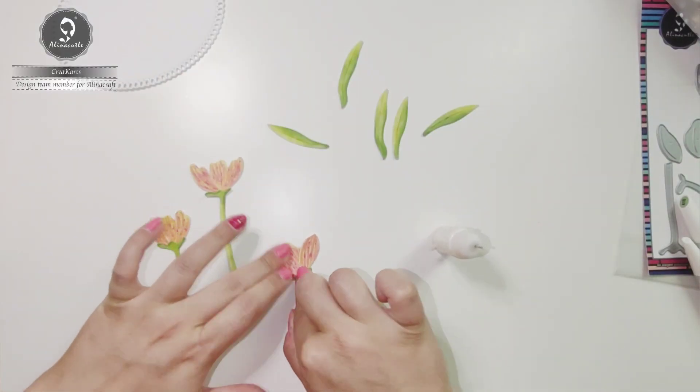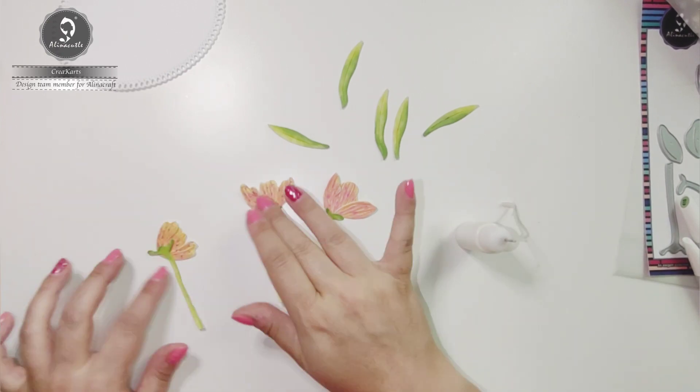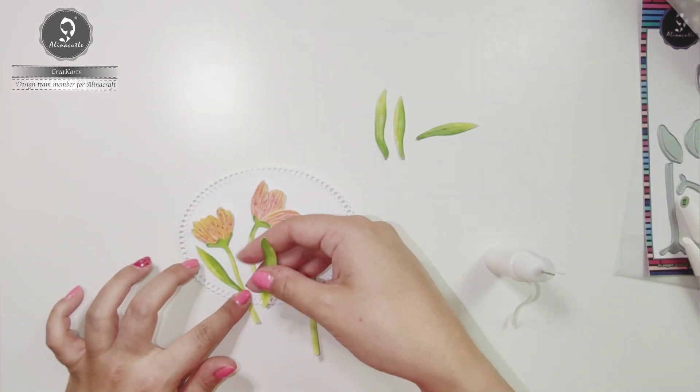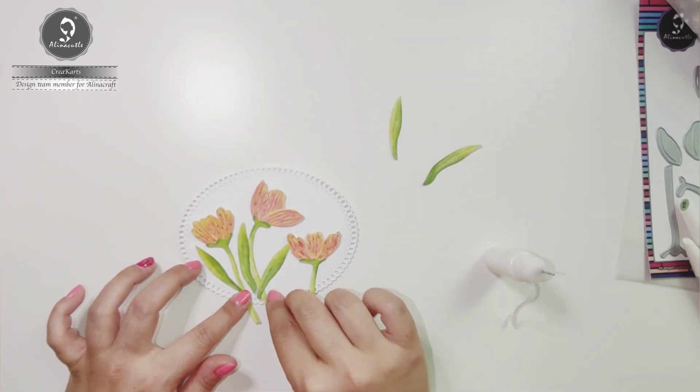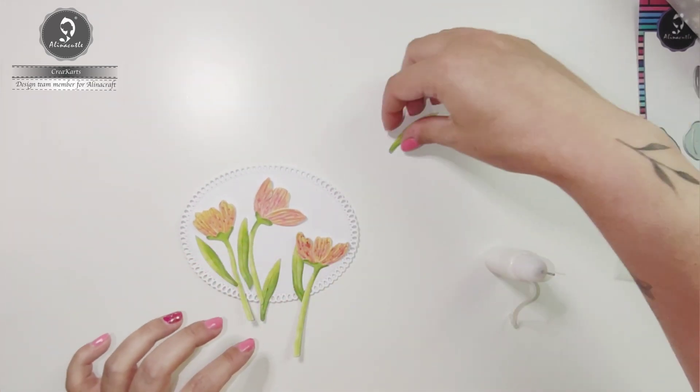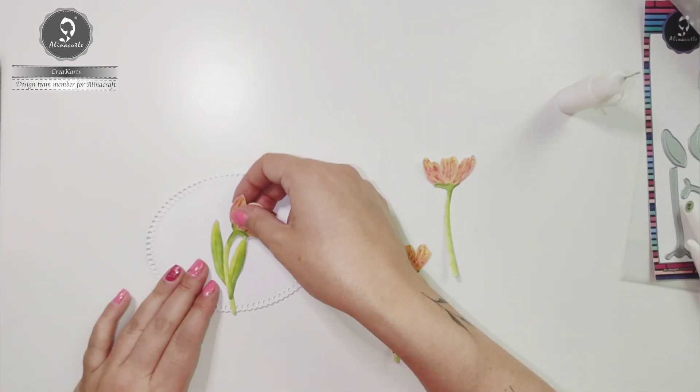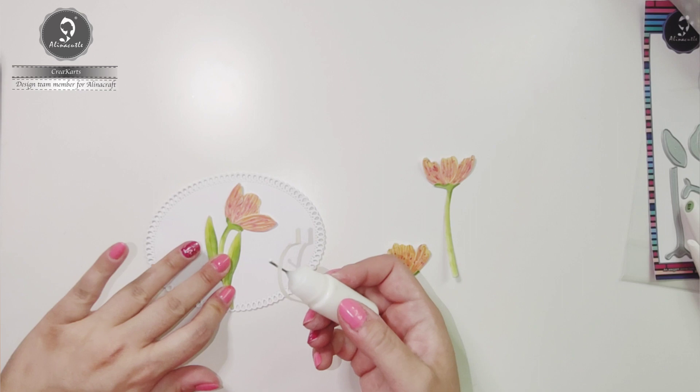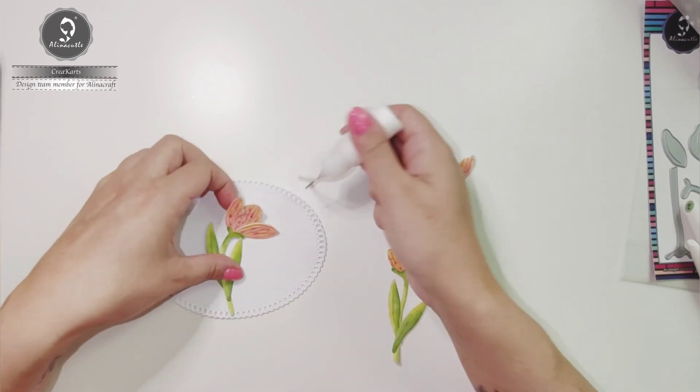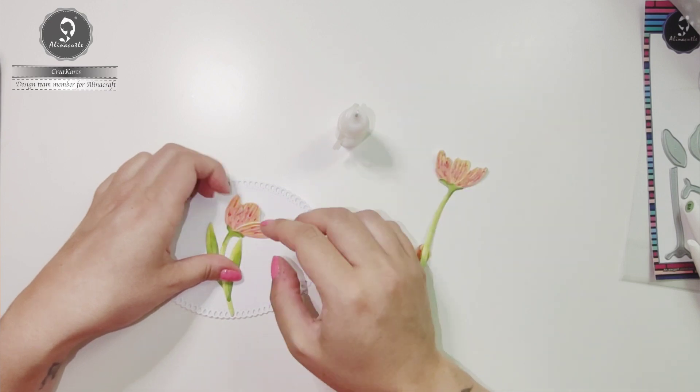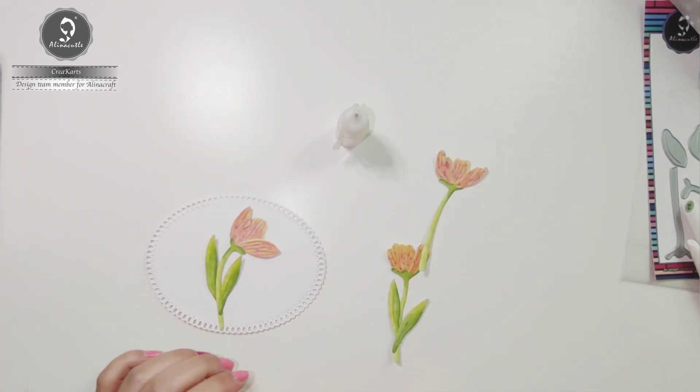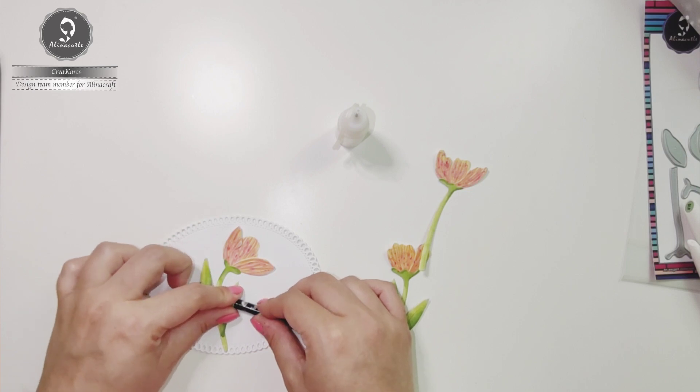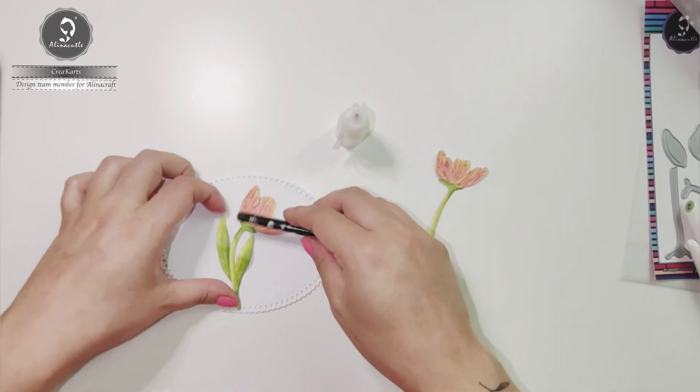Now I'm going to glue everything together. I'm going to use this pencil to shape the leaves and glue the tip onto the background.